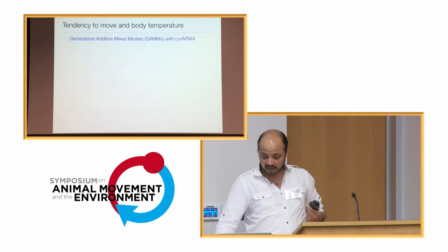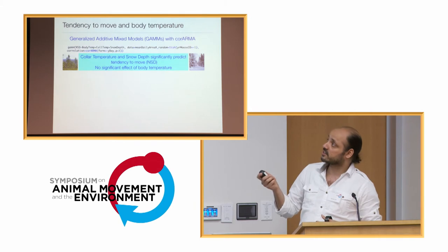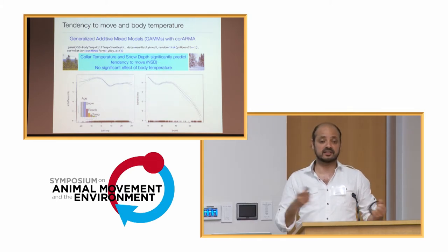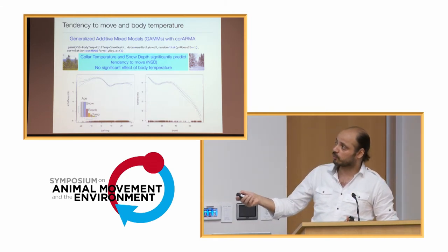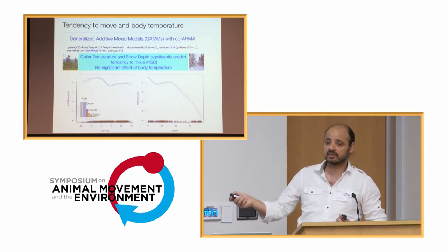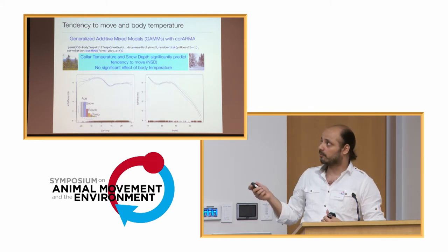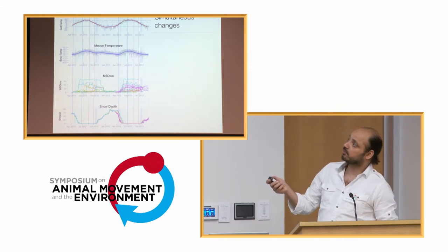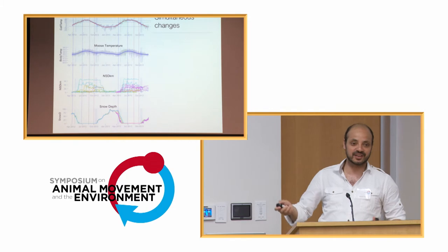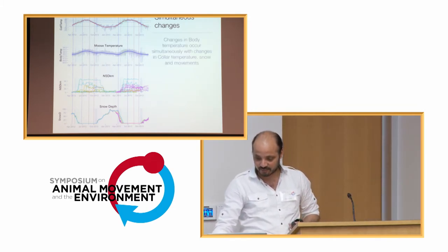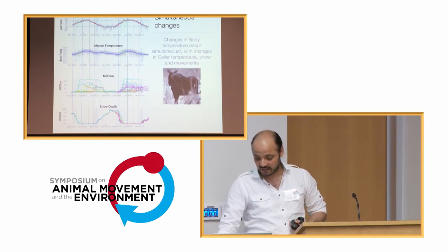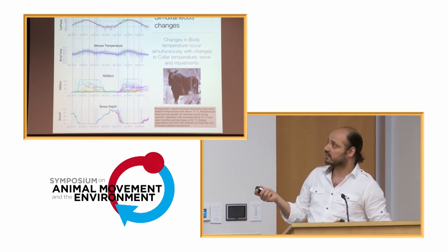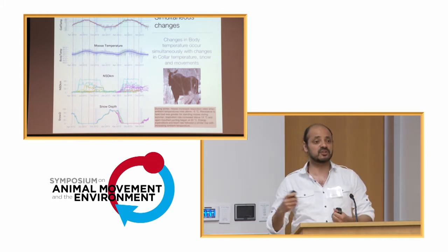Looking at whether these changes affect movement: models show that collar temperature and snow depth affect the tendency to migrate quite well. Snow depth was the most important predictor of migratory tendency, along with collar temperature. This aligns with an older result showing that age, snow, roads, and temperature were the most important variables predicting migratory tendency in moose. It's also known that animals may thermoregulate by increasing respiration rate and open-mouth panting at certain temperatures — something that needs more investigation.